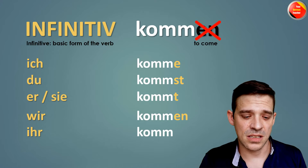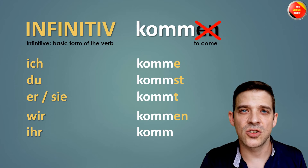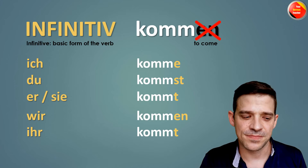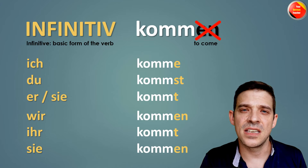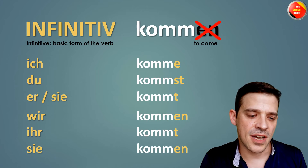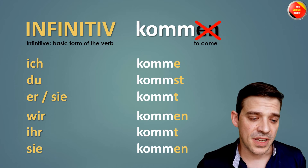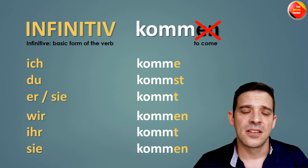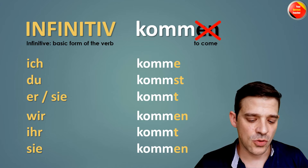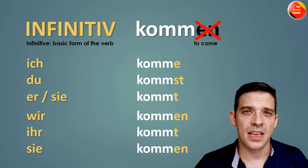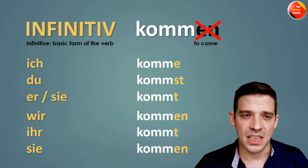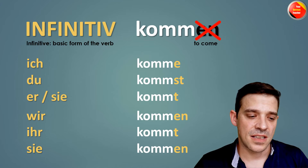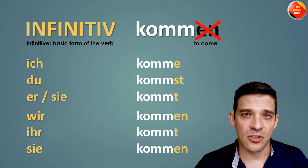For 'Ihr', you add a '-t': Ihr kommt. For 'Sie' (they), you also add '-en': Sie kommen. So to summarize: the only things you have to do is drop the '-en' from the infinitive, and then add: for Ich an '-e', for Du '-st', for Er oder Sie a '-t', for Wir '-en', for Ihr a '-t', and for Sie '-en'. That's it — that's the only thing you need to remember for regular verbs.